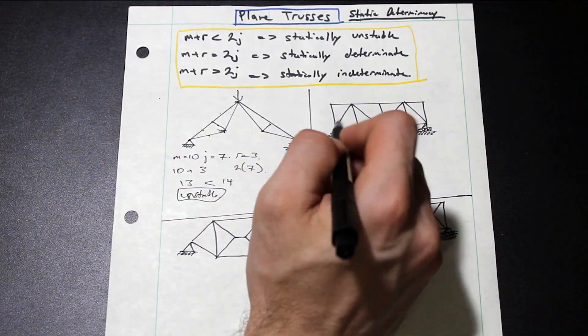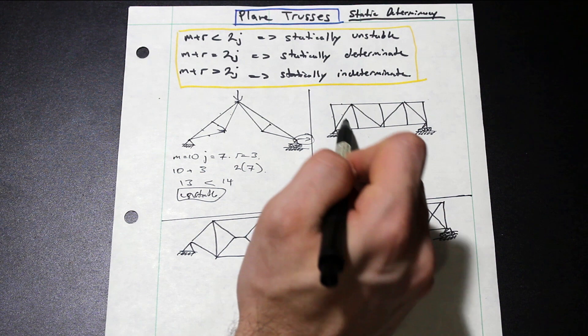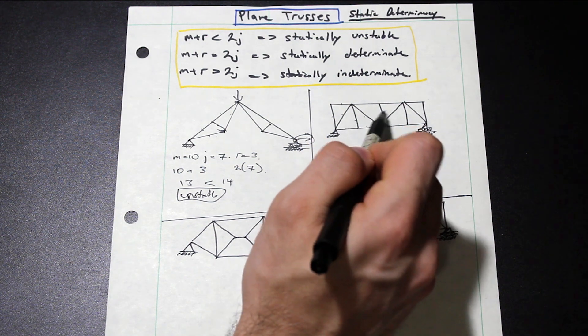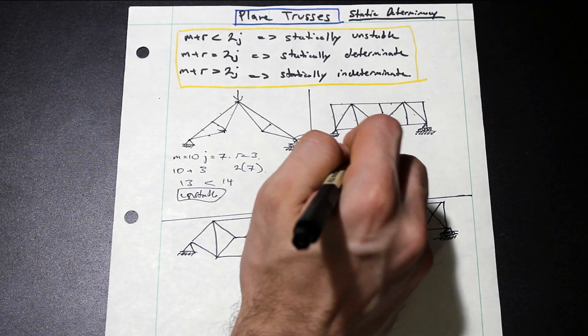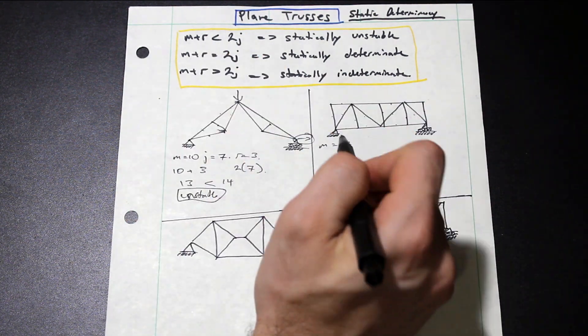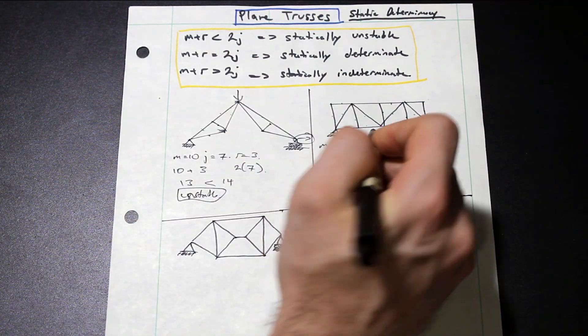Let's take a look at the next one. So let's start with M. How many members do we have here? We have 1, 2, 3, 4, 5, 6, 7, 8, 9, 10, 11, 12, 13, 14, 15, 16, 17. So M is equal to 17. What's our R? Our R is a pin and a roller. That's 3.